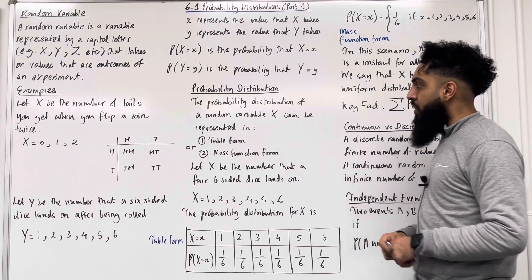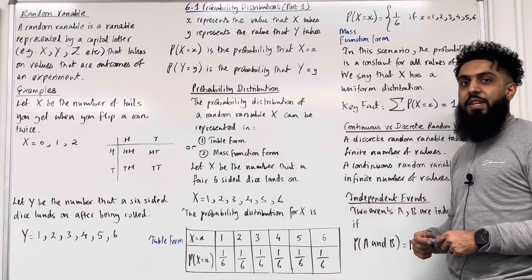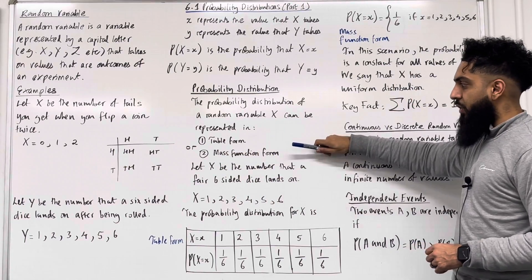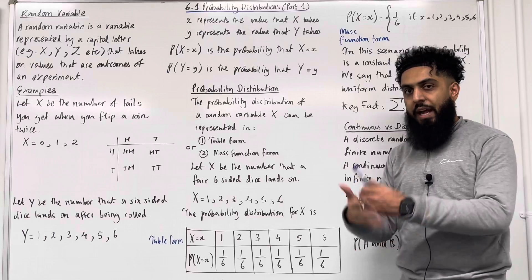The probability distribution of a random variable X can be represented in two different forms: number 1, table form, or number 2, mass function form. Let's have a look at an example.